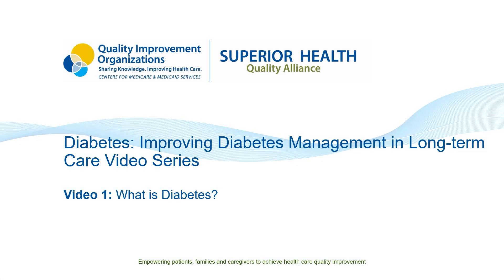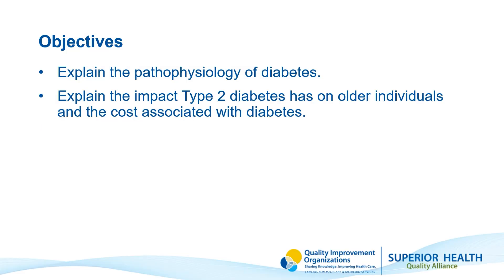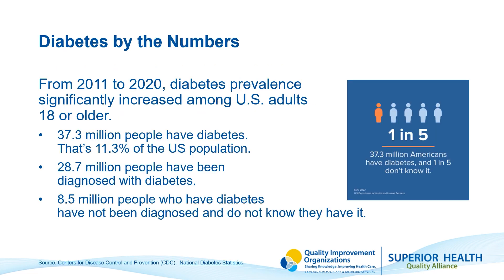This is a three-part video series about improving diabetes management and long-term care, presented by Superior Health Quality Alliance. The recording was developed for healthcare workers with an interest in providing care to individuals with diabetes residing in long-term care settings. This first video will address the pathophysiology of diabetes. You can watch them in order or based upon your interest. The objectives are to explain the pathophysiology of diabetes and the impact type 2 diabetes has on older individuals, along with the associated costs. Before we discuss diabetes, it's important to understand the impact it has on our country.